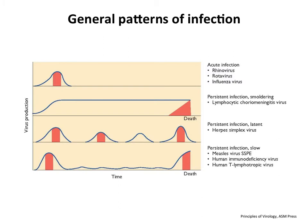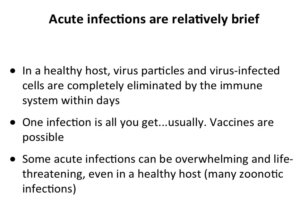You've seen this a couple of times now — these are the general patterns of infections. This is a timeline: virus production shown in blue and disease shown in red. Today we're going to talk about acute infections where the timeline is very short. You have virus production and disease all pretty much at the same time. Dr. Silverstein has talked about persistent infections that go on for long periods of time.